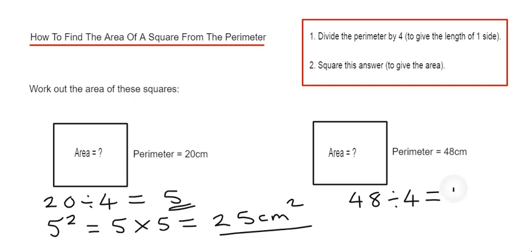48 divided by 4 is 12 centimeters. And then we just need to square that 12. We multiply it by itself. 12 times 12 is 144 centimeters squared.